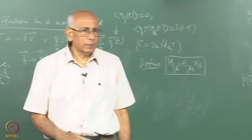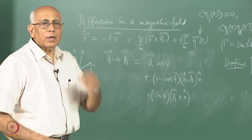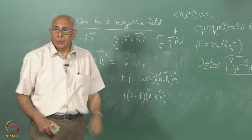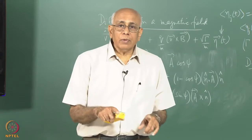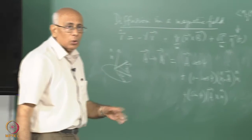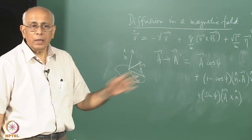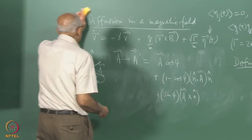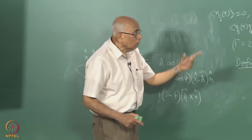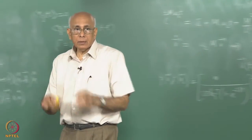Our task is to find out what happens to the diffusion. We have a formula: the integral of the velocity correlation from 0 to infinity is the diffusion coefficient. We showed this by looking at the long-time behavior of the mean square displacement. Now we have indices to worry about, so we have a diffusion tensor, not just a scalar coefficient.